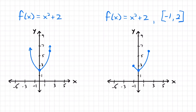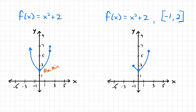Not all functions are going to have absolute extrema. For example, take the function f(x) = x² + 2. Looking at this graph, at the bottom we do have an absolute minimum — the point (0, 2) — because no point on this graph will get lower than that. However, this function does not have an absolute maximum because the function goes on forever; you could just keep picking larger and larger y-values.